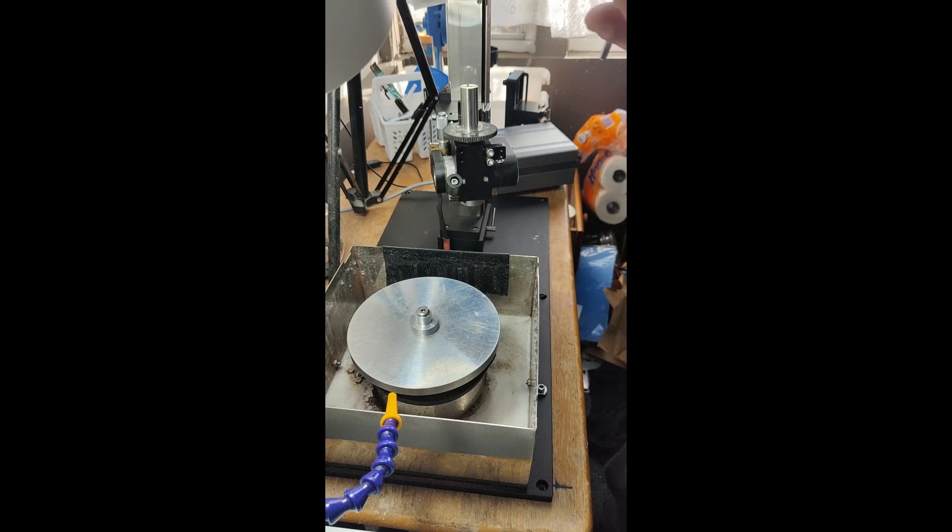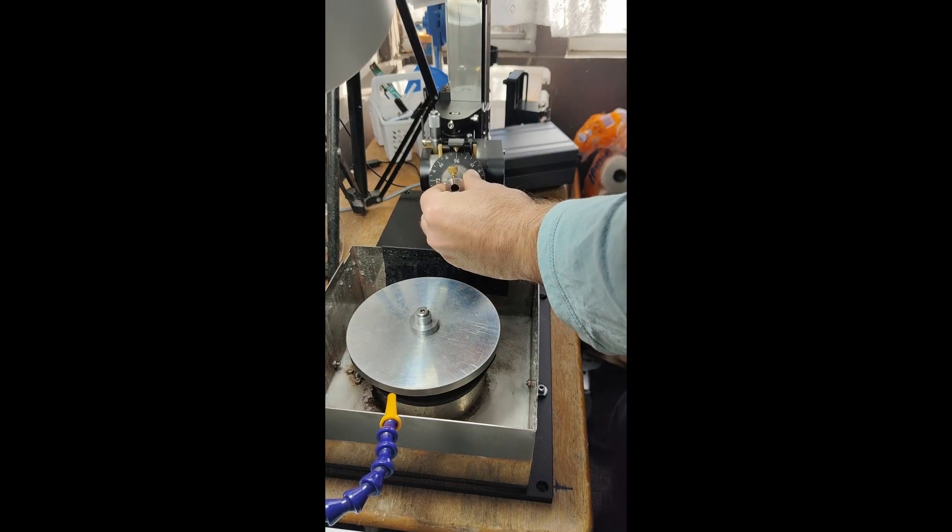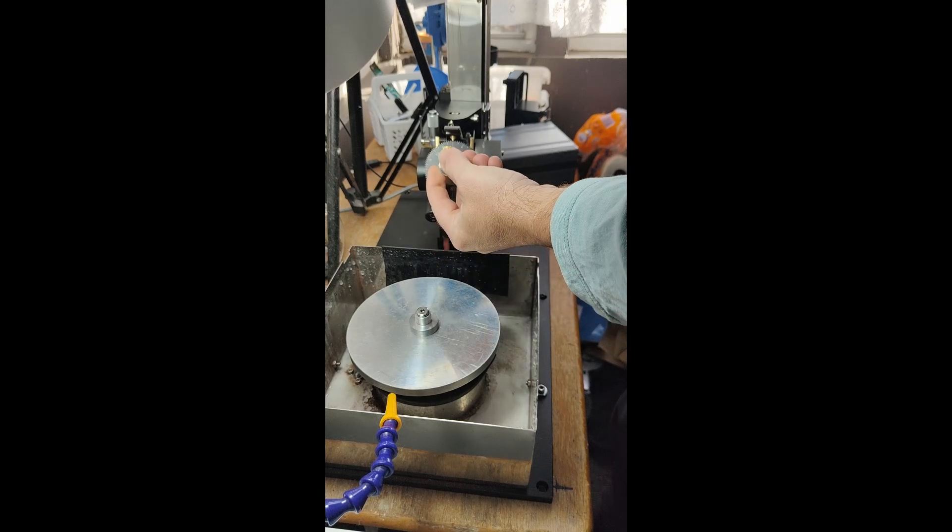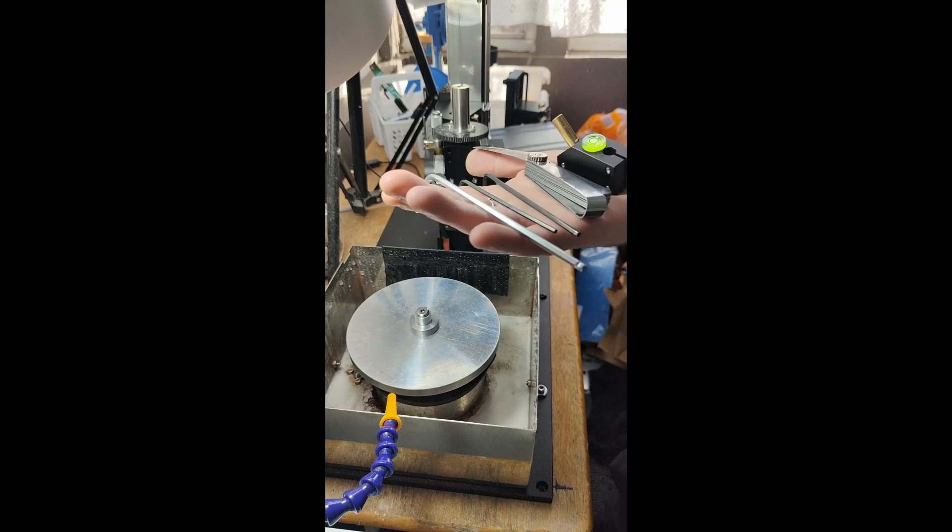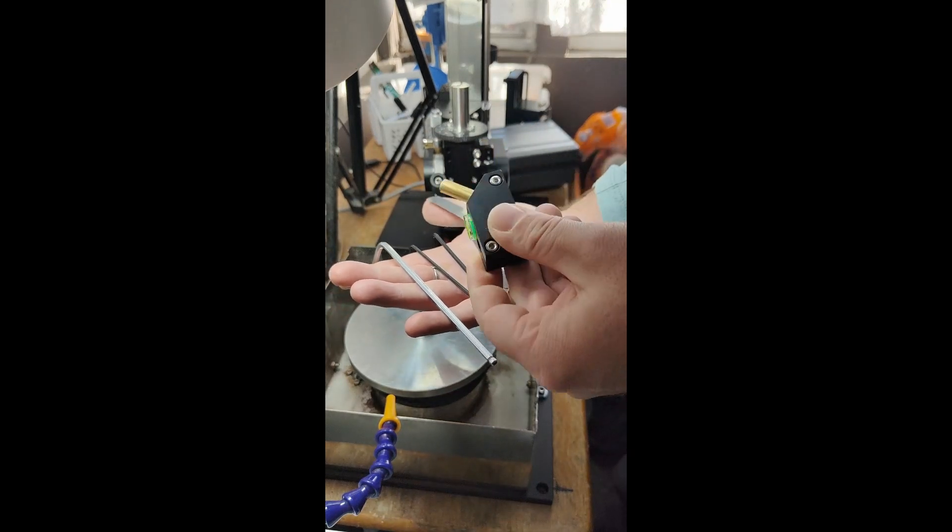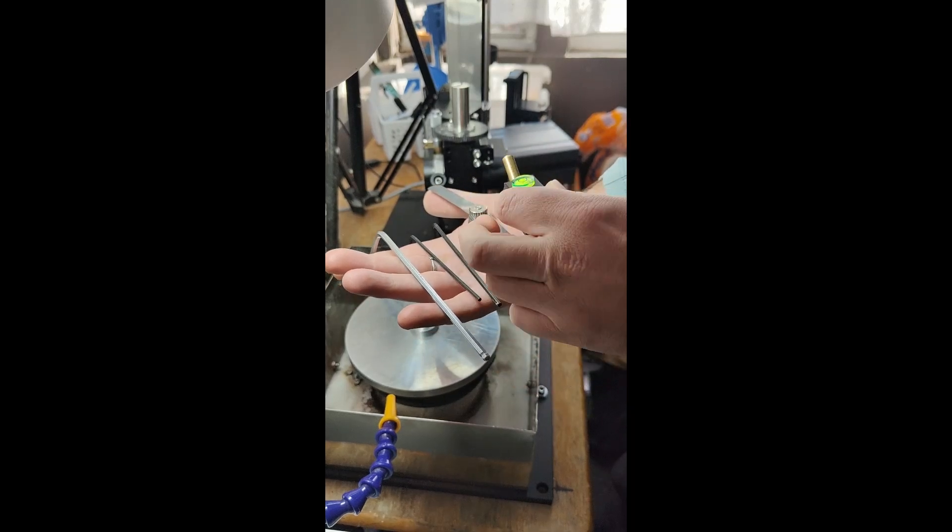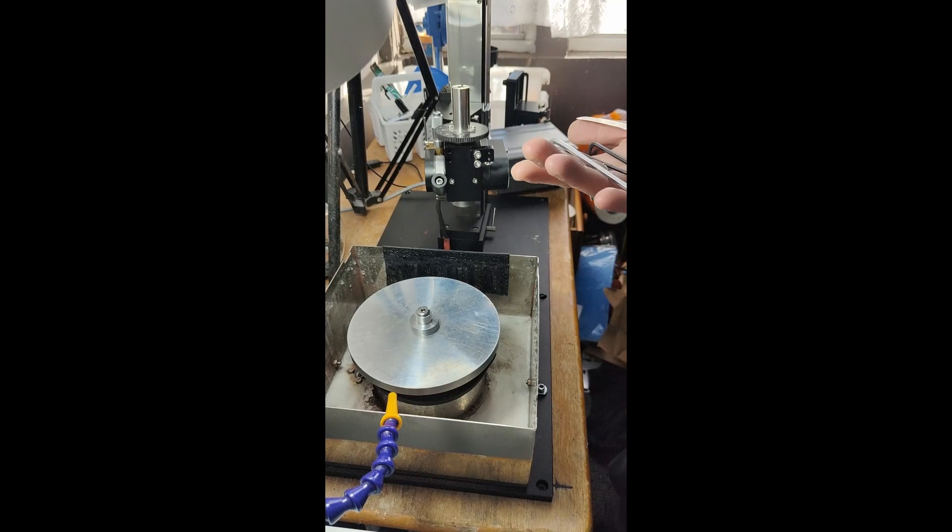So what we're going to have to do here is readjust our index wheel. It is well off and with the keyed dops that's not going to work well. Some of the tools we're going to need here are the supplied allen keys, a feeler gauge, a 45 degree adapter, and we'll get that dead true no time at all.